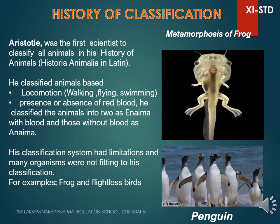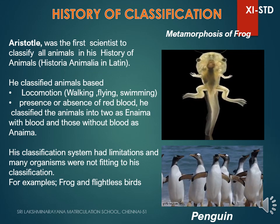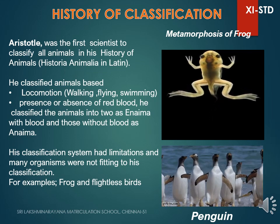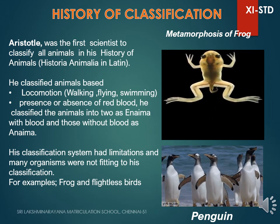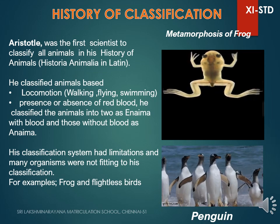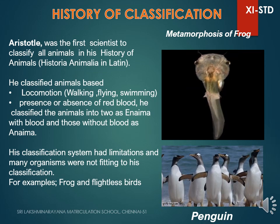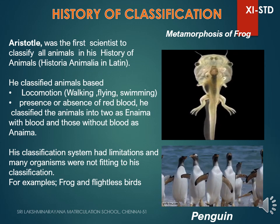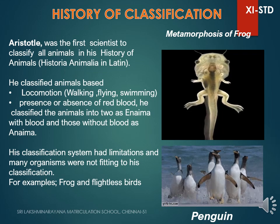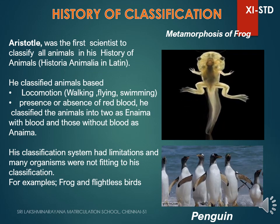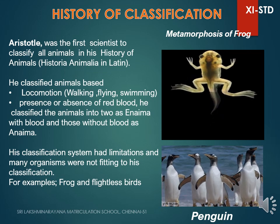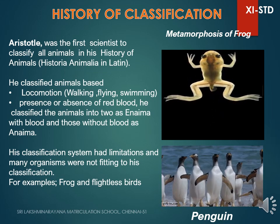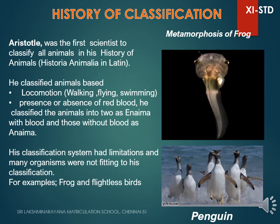Early classification of organisms were based on only two criteria: beneficial or harmful animals. Aristotle was the first scientist who classified all organisms into plant and animal. He classified animals based on locomotion — meaning movement — under three categories: walking, flying, and swimming. And also based on the presence or absence of red blood cells, he classified animals into two groups: those with blood (Enaima) and those without blood (Anaima).